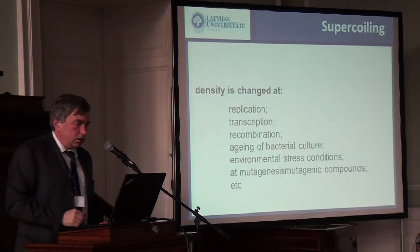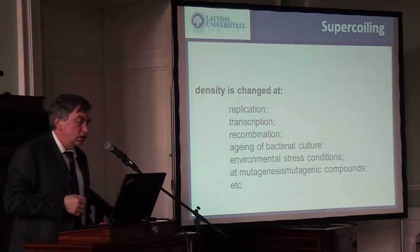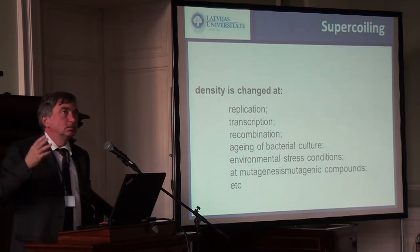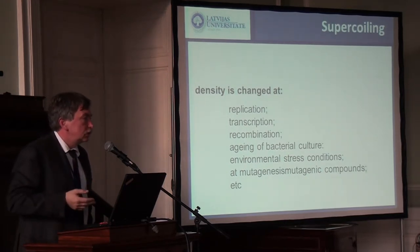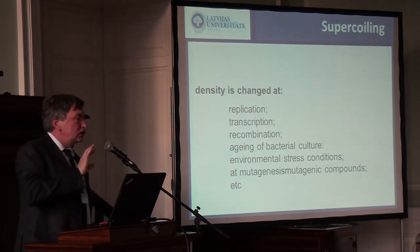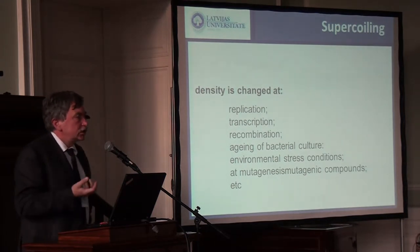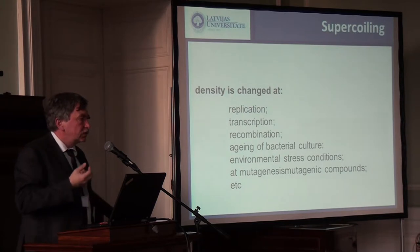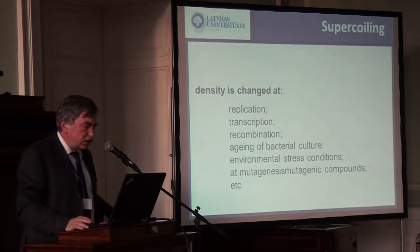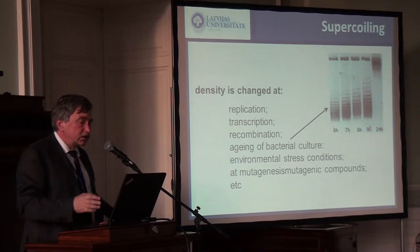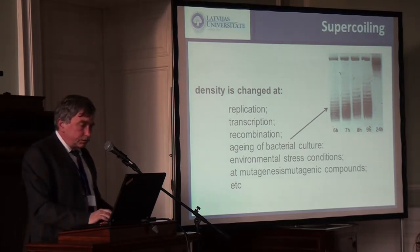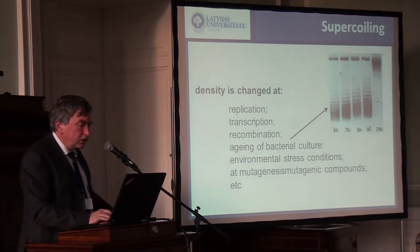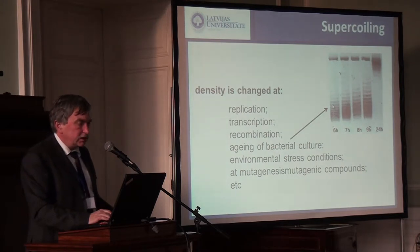Supercoiling density changes during the cell cycle — it is changed by replication and transcription. All life events in the bacterial cell influence the supercoiling density. On the other hand, supercoiling density can be viewed as a very integral, holistic reflection of the processes taking place in the cell. Here you see, for example, a gel showing how with the age during growth time in batch culture, the supercoiling density decreases.